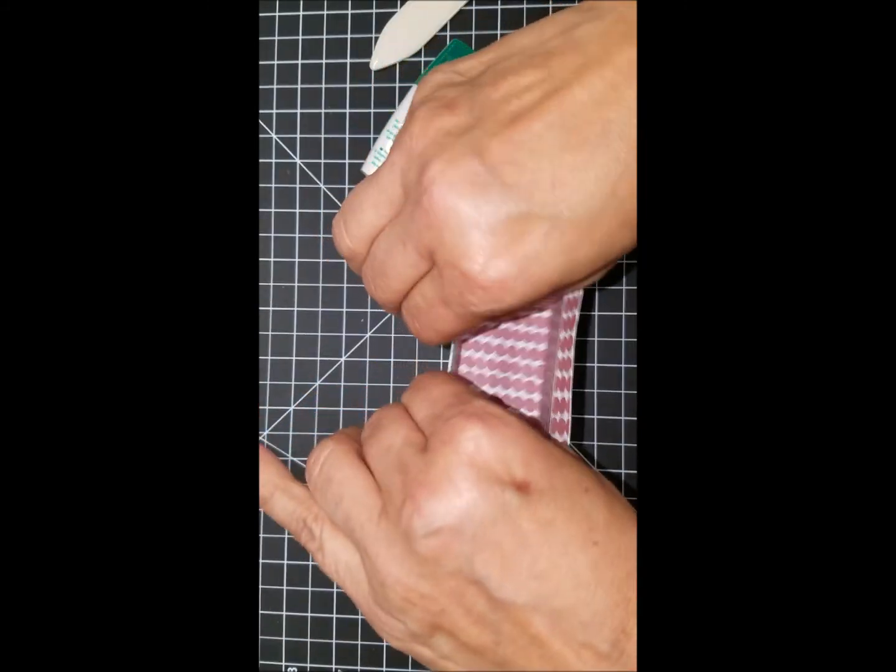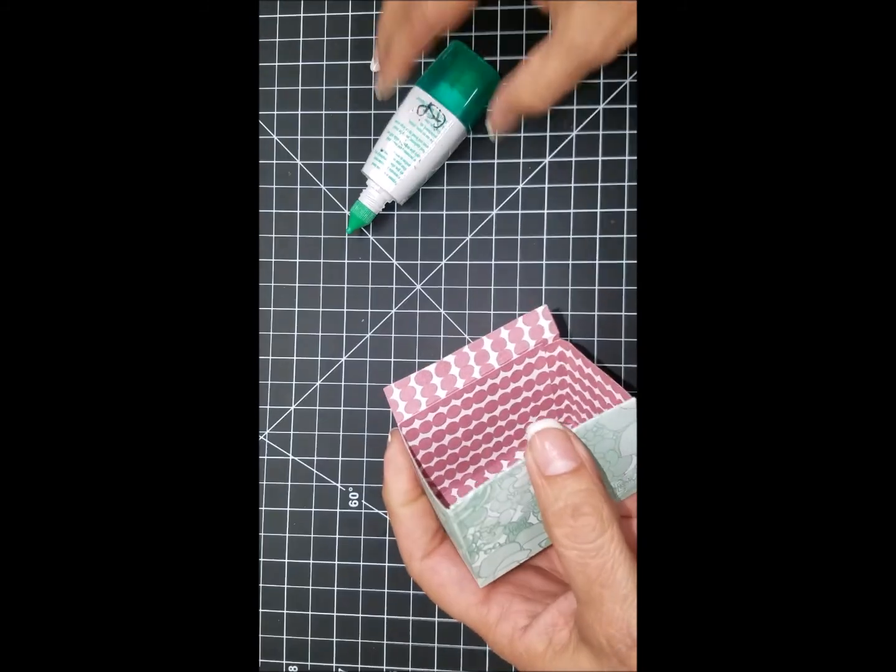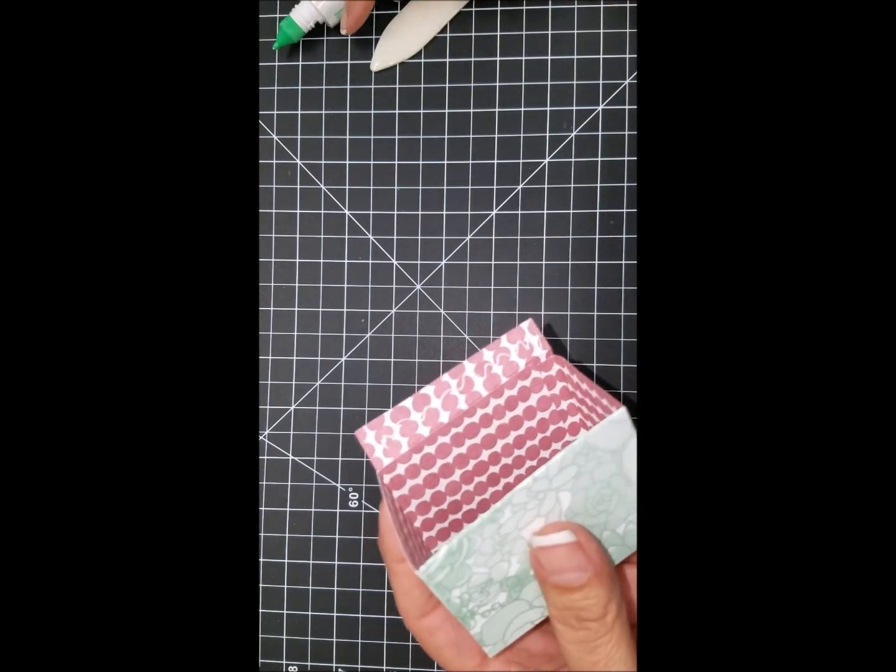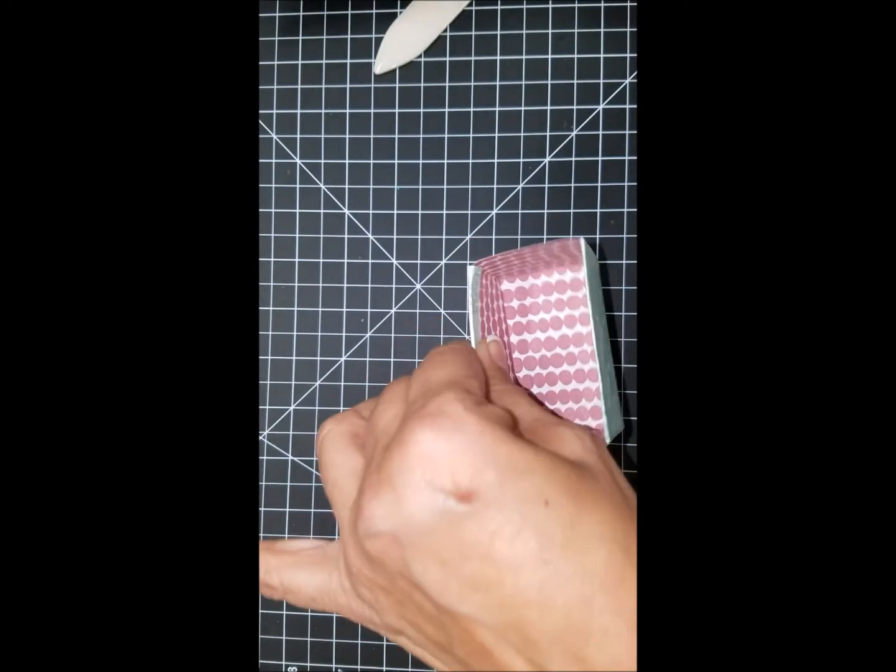Do the same on the other side. Again, a little goes a long way as you can see. I'm not using hardly any adhesive, just a little to make sure it makes contact with my paper and press and squeeze.